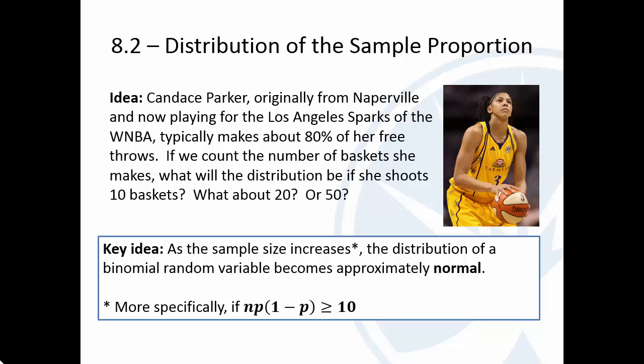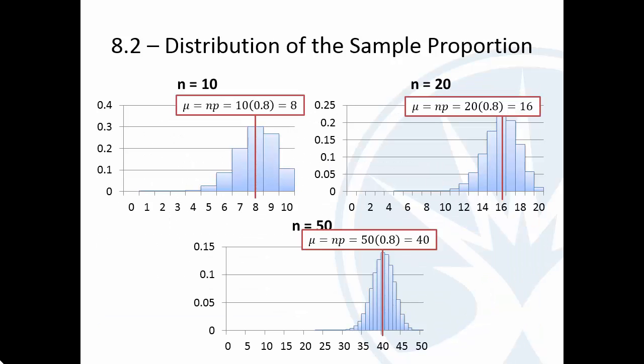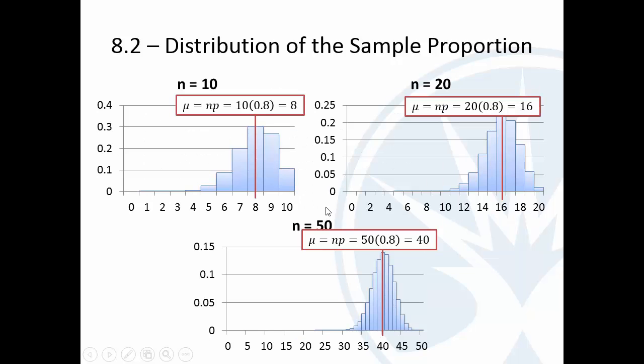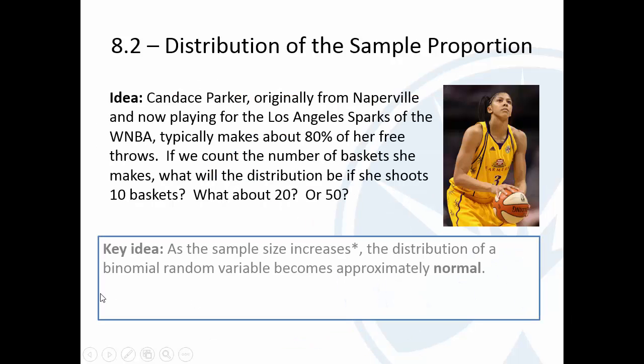And it can't be exactly normal because it's discrete. It's just counting. It can't be perfectly normal because there are always going to be little ridges because it can only be 35, 36, 37. But it can be approximately normal.